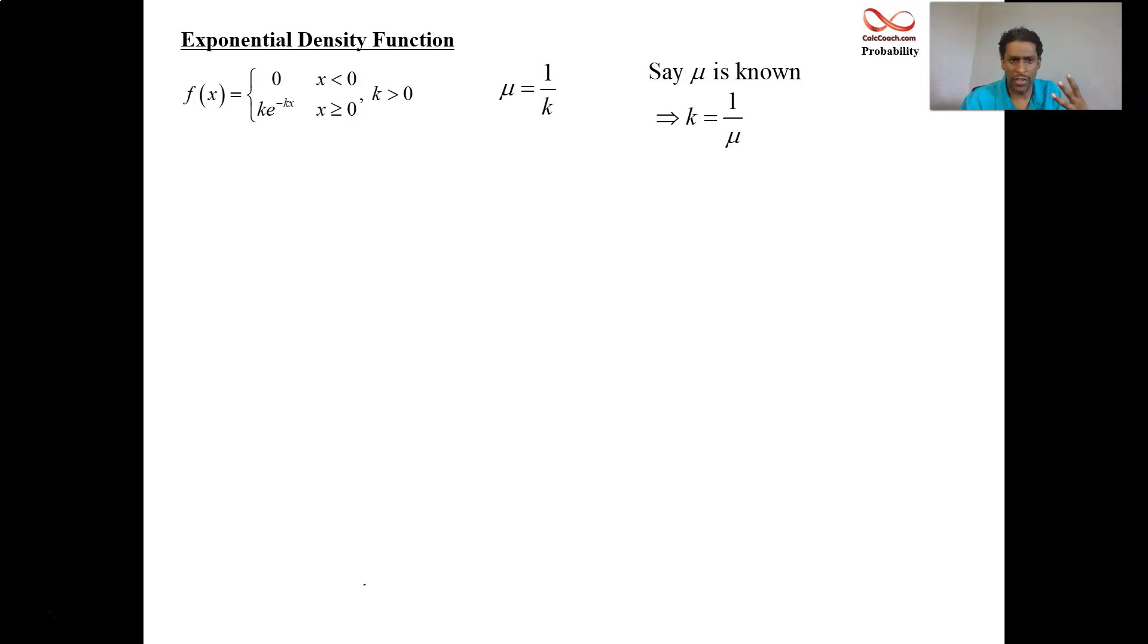So you give me an exponential density function, you give me the mean, I know everything I need to build the function because now I can replace the k in the formula with 1 over the mean. So the formula is now going to be 1 over the mean e to the negative x over the mean for all x's that are positive. All right.